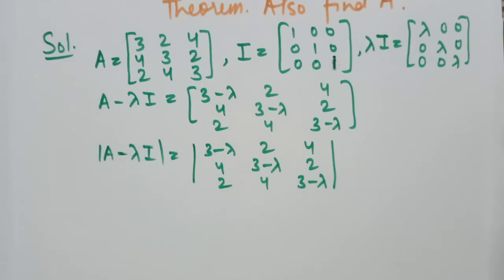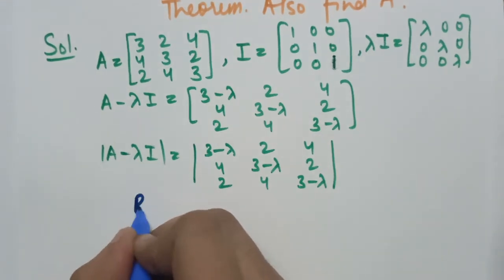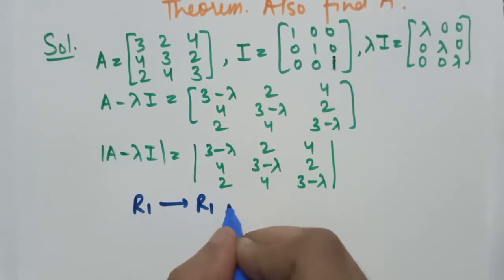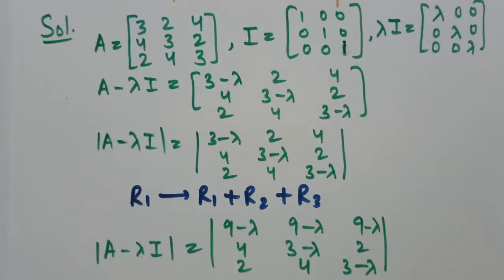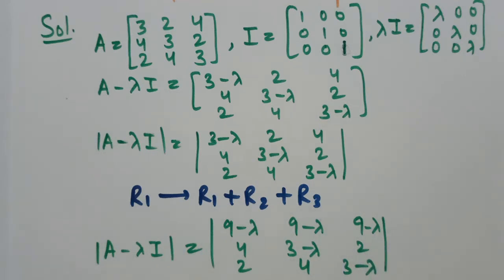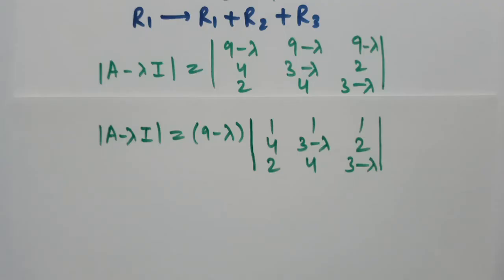To make solving the determinant easier, I'll use row operations. The first operation is R1 replaced by R1 plus R2 plus R3. After applying this operation, the first row becomes [9−lambda, 9−lambda, 9−lambda], and the remaining rows are [4, 3−lambda, 2] and [2, 4, 3−lambda]. Clearly, (9−lambda) can be taken common from the first row.